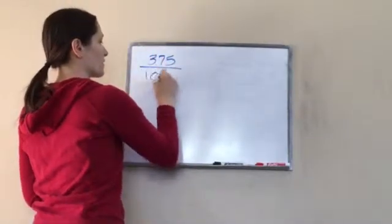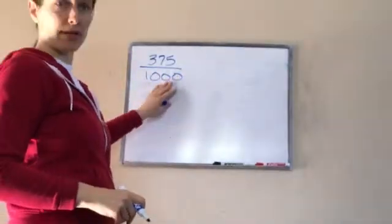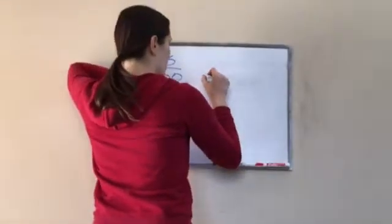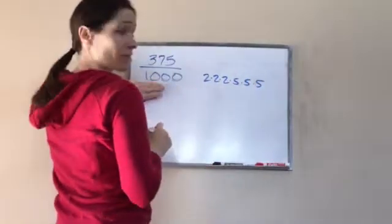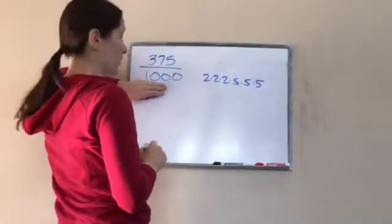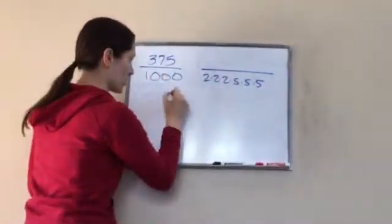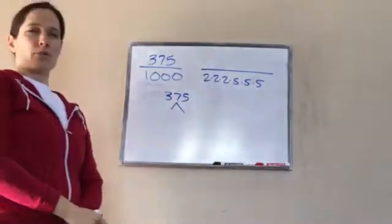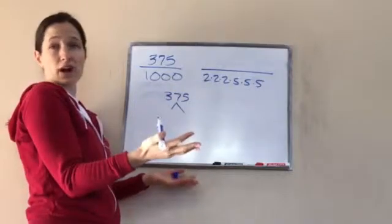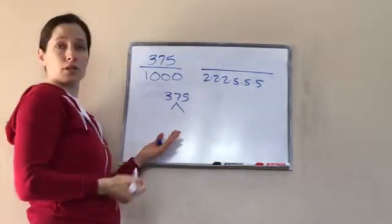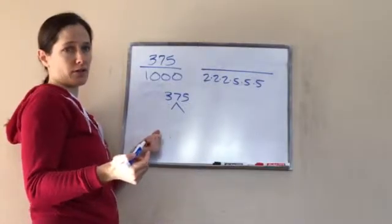Let's do one more. 375 over 1,000. Now we already know 1,000, right? We already know how to break that one down — tell me the numbers. 2 times 2 times 2 times 5 times 5 times 5. Okay, that's the prime factorization for 1,000 because we just did that. But now let's do 375. I would always start with 5 or maybe even a 25 because it ends in 5. So do you want to start with a 5 or a 25? Let's try 25.